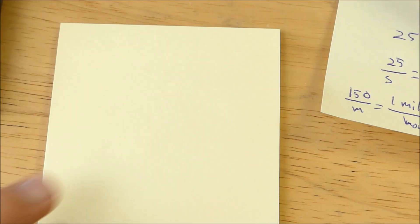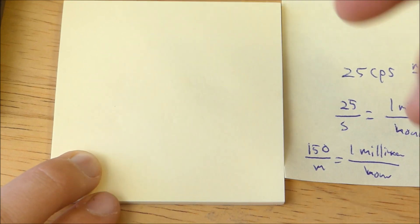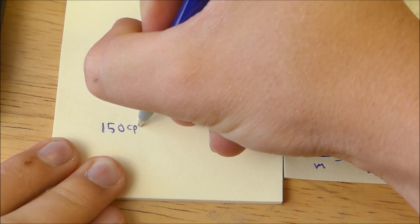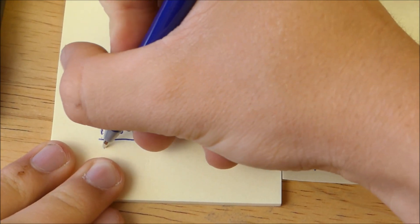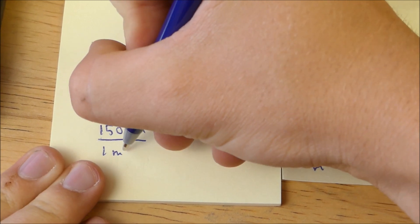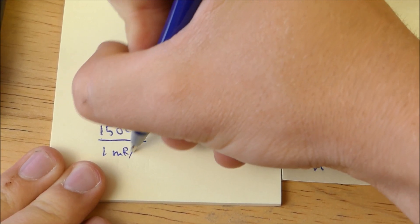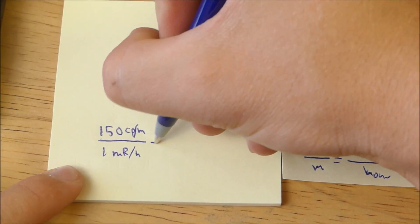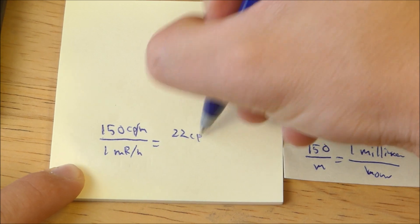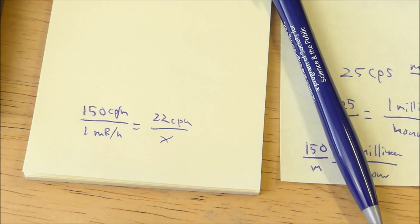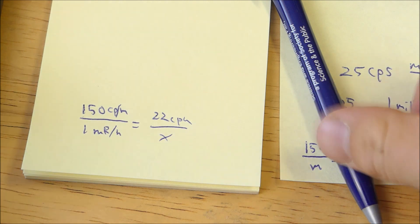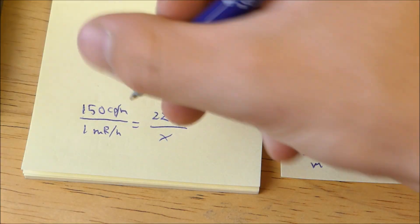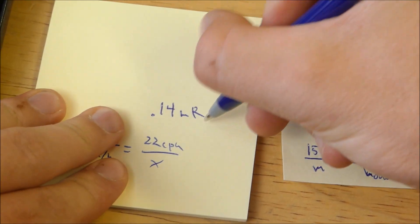So let's see. Alright, so here's how we're going to do this. We have 150 CPM is equal to 1 millirem per hour. And then what we can do is we can set that equal to 22 CPM equals x millirems per hour. That means the approximate background radiation of my room is equal to 0.14 millirems. So this is 0.14 millirems per hour.